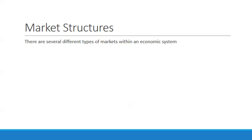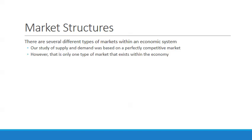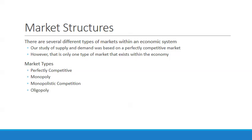There are several different types of markets within an economic system. Our study of supply and demand was based on a perfectly competitive market, but that's not the only type. Within economic systems, there are different types of markets, and within those markets, different types of business models. The four market types we'll examine are: perfectly competitive, monopoly, monopolistic competition, and oligopoly.